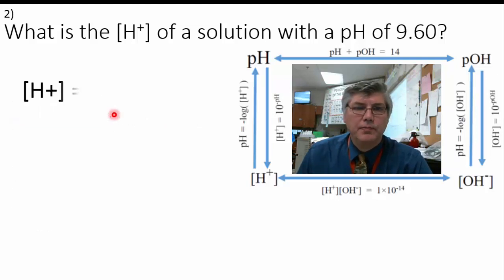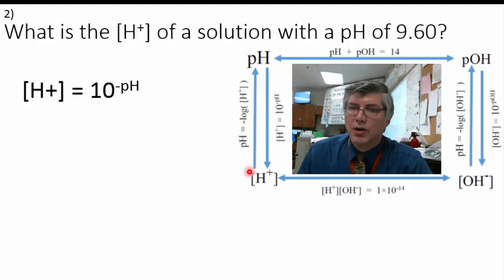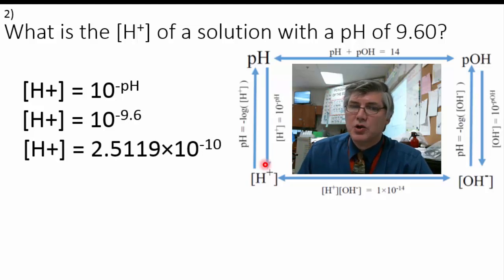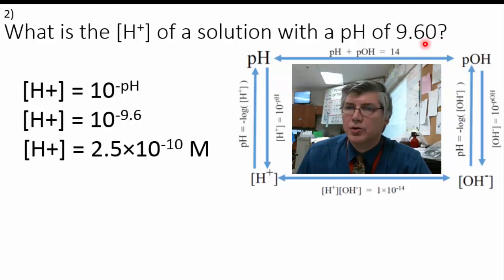We plug that into our calculation: the hydrogen ion concentration is 10 raised to the power of the negative pH. We can find that by doing the equation backwards — going this way instead. 10 to the negative 9.6 gives us 2.5119 times 10 to the negative 10. We only have two significant figures — the last two digits in our pH. So rounding to two significant figures: 2.5 times 10 to the negative 10 molar is the hydrogen ion concentration.